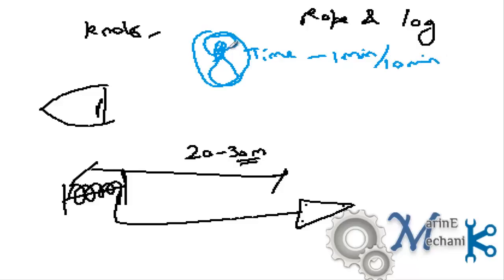Once the sand clock was on, they threw this piece of wood just at the aft of the ship and left this bobbin to uncoil. Thus the piece of wood was at this position and the ship was moving forward.